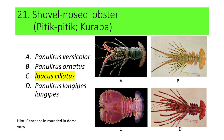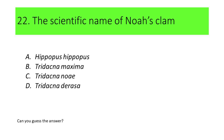Ibacus ciliatus is commonly called shovel-nosed lobster and locally called pitik-pitik or kurapa.